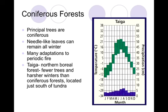Next we have a coniferous forest and these principal trees are coniferous, which means they have cones. They're usually needle-like evergreens and remain green all winter long. Many of them have adapted for periodic fires — the pine cones are the seeds for these year-round trees, and the seeds are dispersed and activated when those cones get hot. So if a fire comes through and burns up those cones of the coniferous trees, they will release those seeds. Some of the first things to colonize during the succession after a fire are these pine trees, which provide habitat and protection for certain organisms.